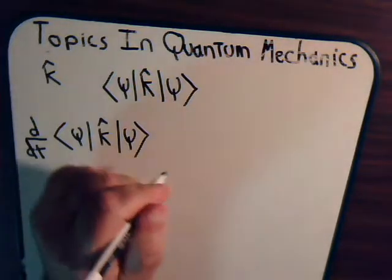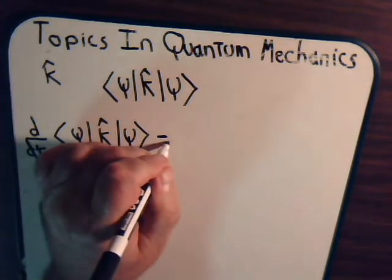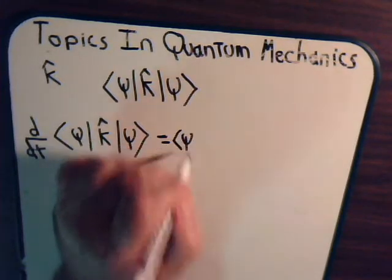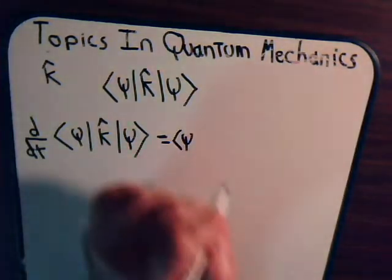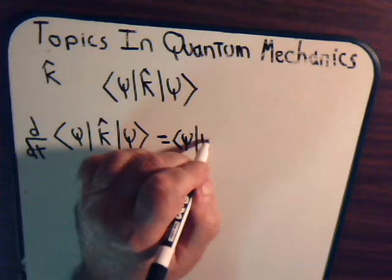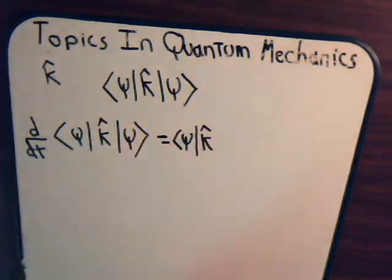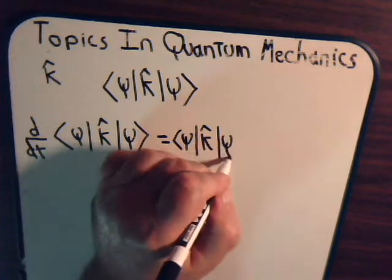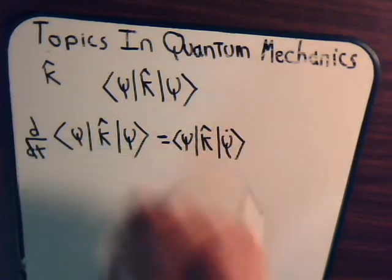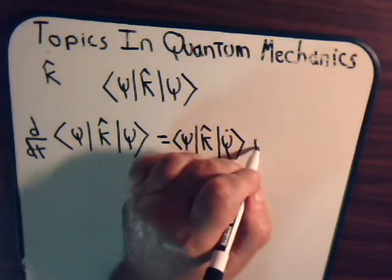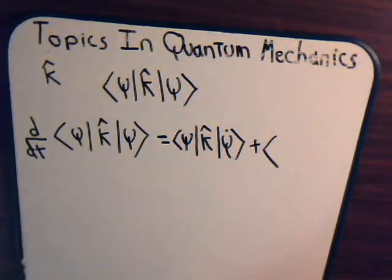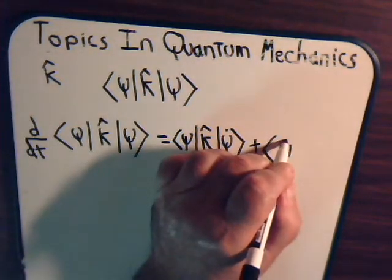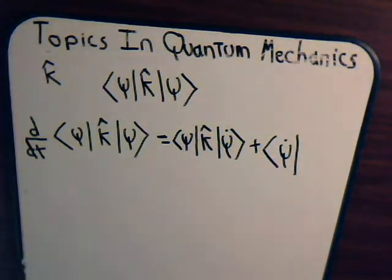So this would be equal to: we have a bra vector psi, the observable K, then we have psi-dot — the derivative — plus the bra vector psi-dot, its rate of change, its derivative.